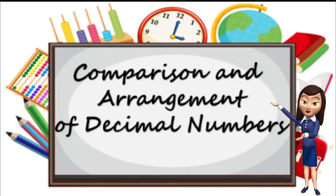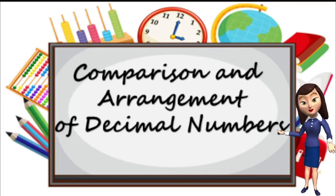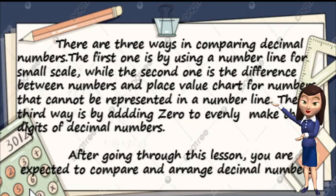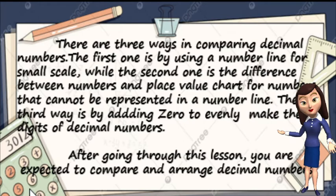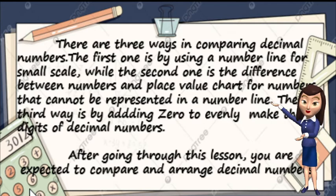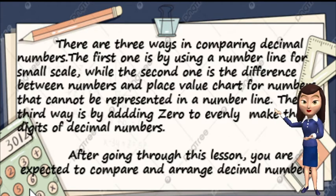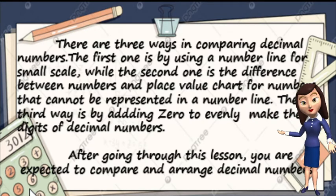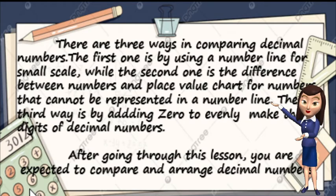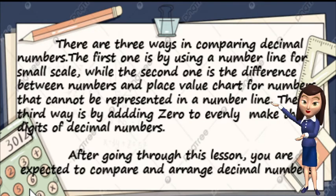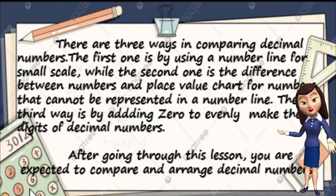Hi kids! Today we are going to discuss comparison and arrangement of decimal numbers. There are three ways in comparing decimal numbers. The first one is by using a number line for small scale, while the second one is the difference between the numbers and place value chart for numbers that cannot be represented in a number line. The third way is by adding zero to evenly make the digits of decimal numbers. After going through this lesson, you are expected to compare and arrange decimal numbers.